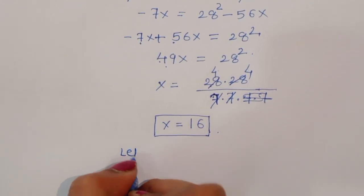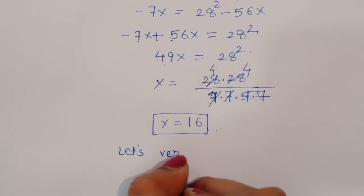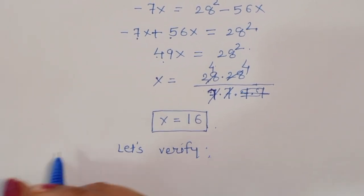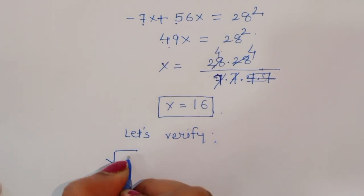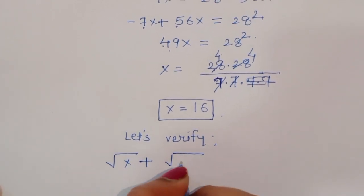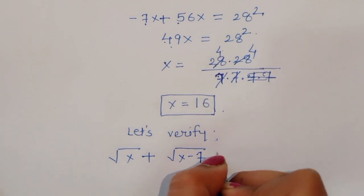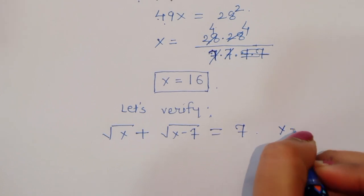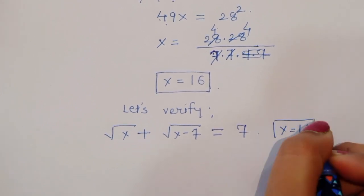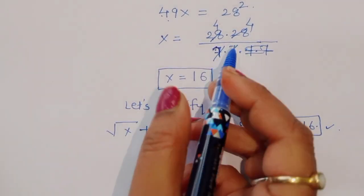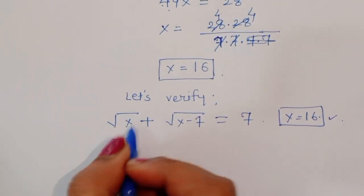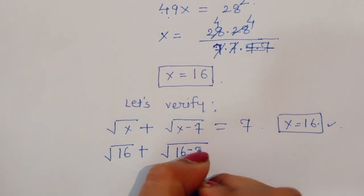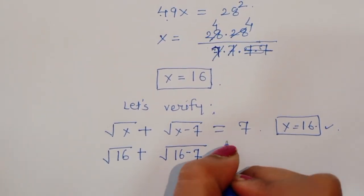Let's verify this value. Our question is: square root of x plus square root of x minus 7 is equal to 7. We substitute x equals 16: square root of 16 plus square root of 16 minus 7. Let's verify this.